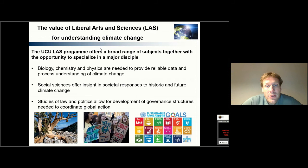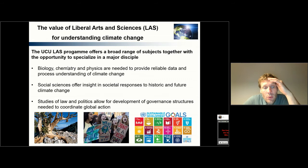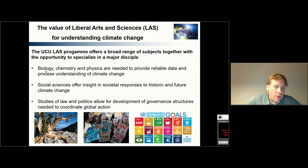Now let's look into the value of liberal arts and sciences for understanding climate change. The liberal arts and sciences program at Utrecht University College offers a very broad range of subjects together with opportunities to specialize in a major discipline. Biology, chemistry, and physics are needed to provide reliable data and process understanding of climate change. On the other hand, social sciences offer insight into societal responses to historic and future climate change. Studies of law and politics allow for the development of governance structures needed to coordinate climate action. Depending on your interest, all of them can be applied in the context of climate change and sustainable development.